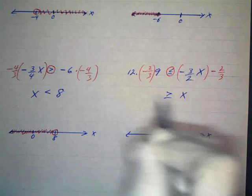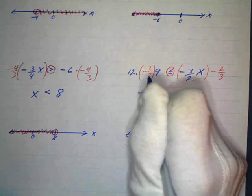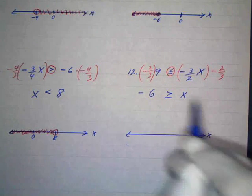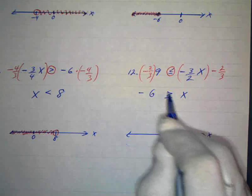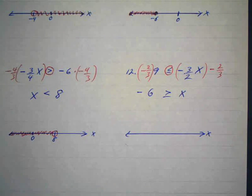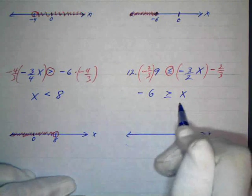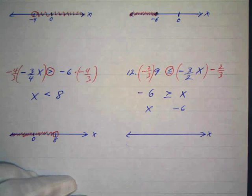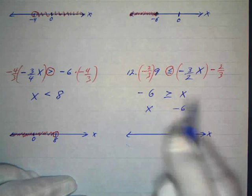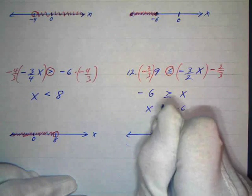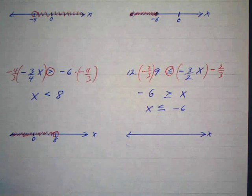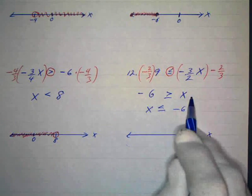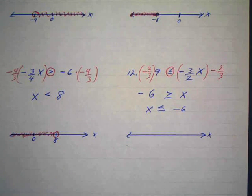A negative times a positive is a negative. 3 goes into 9 three times, and 2 times 3 is 6, so x is less than or equal to negative 6. But since the arrow points towards x when the variable is on the right, it's a bit tricky — so I'll rewrite it with x on the left. This says negative 6 is greater than or equal to x, which means x is less than or equal to negative 6.